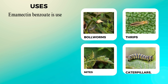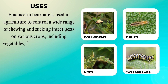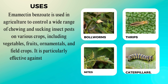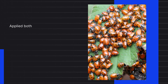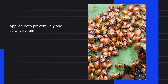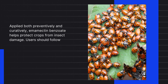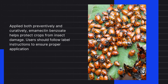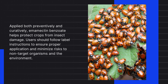Emamectin benzoate is used in agriculture to control a wide range of chewing and sucking insect pests on various crops, including vegetables, fruits, ornamental plants, and field crops. It is particularly effective against pests such as caterpillars, leaf miners, thrips, and mites. Applied both preventively and curatively, emamectin benzoate helps protect crops from insect damage. Users should follow label instructions to ensure proper application and minimize risks to non-target organisms and the environment.